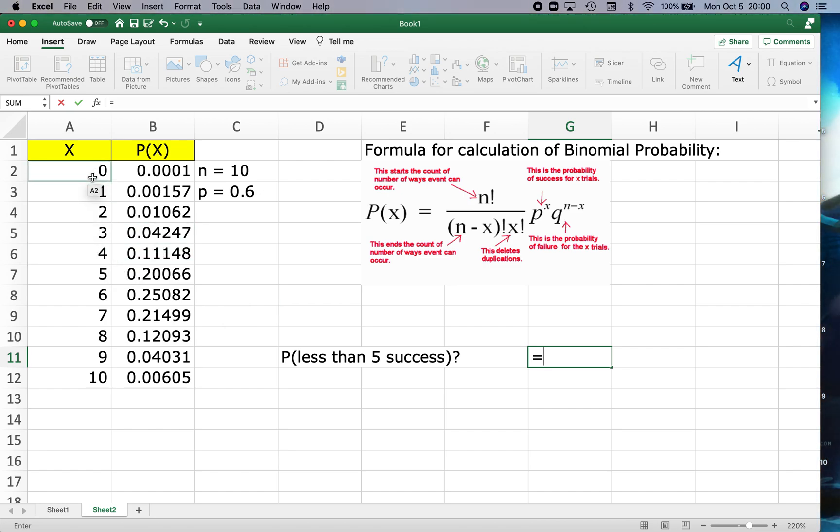So I'm going to sum the probabilities of 4, 3, 2, 1, and 0 together. So the probability that I have less than 5 successes is the probability of 4, 3, 2, 1, or 0 successes added together.